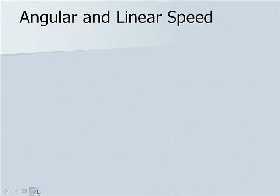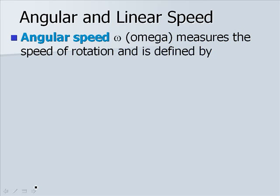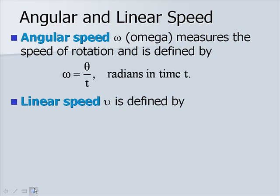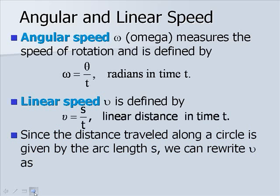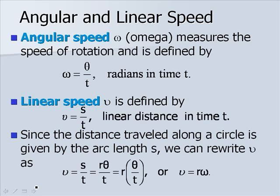Now let's look at angular and linear speed. Angular speed, given by omega, which looks like a curvy w, measures the speed of rotation, and is defined by the equation theta over t in radians per time. Linear speed, given by a curvy v, is defined by s over t, which is our linear distance arc length over time t. Since the distance traveled along a circle is given by the arc length s, we can rewrite linear speed as, instead of s over t, as r theta over t, which is r times theta over t, and theta over t was our measure for angular speed. So we say that our linear speed is r times omega.